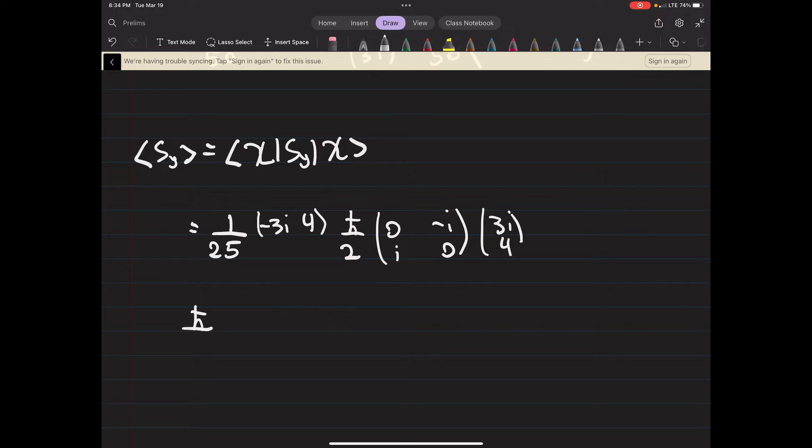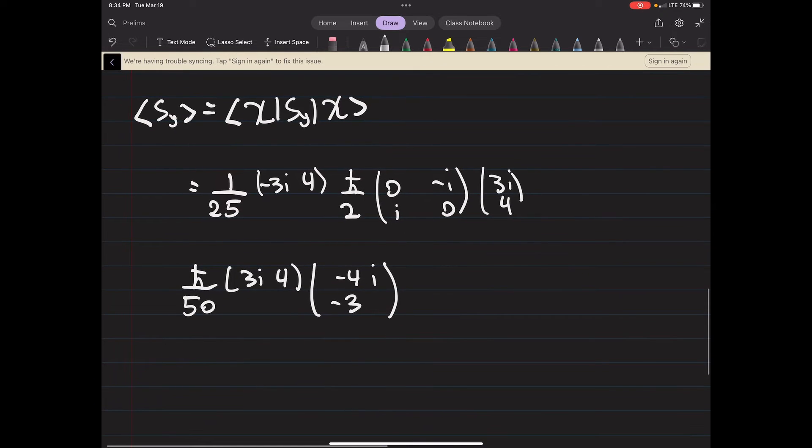Okay, so we're still going to have our h bar over 2, (0,-i; i,0) and then (3i, 4). So I'm just going to erase this for room, but that's the only real difference here. Again the h bar over 2 can just be moved in the front. And what do we get? We get -4i and then 3i squared, so i squared is negative 1, so this just becomes -3.